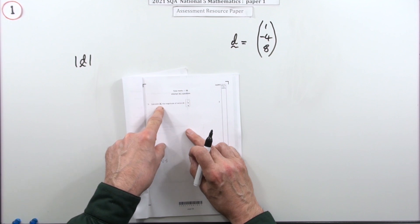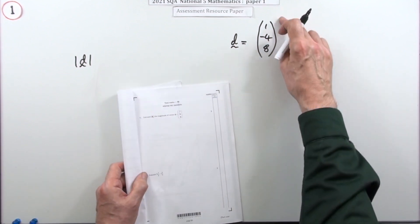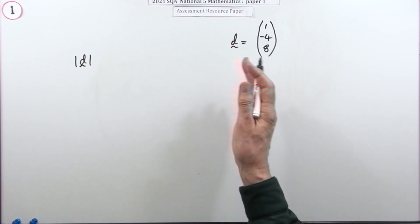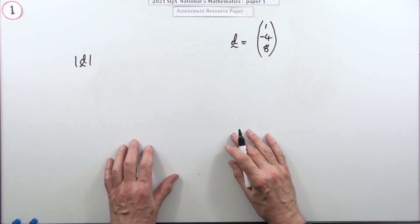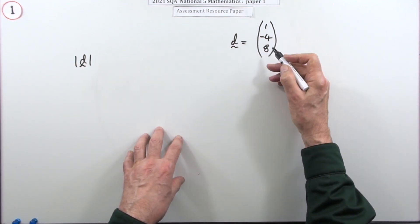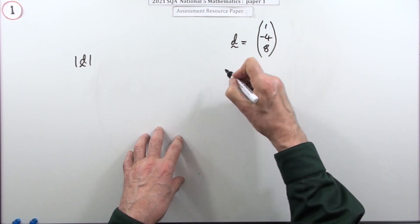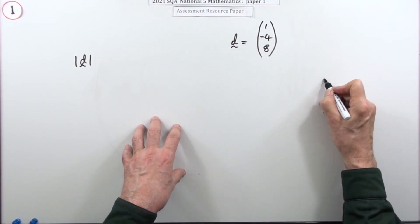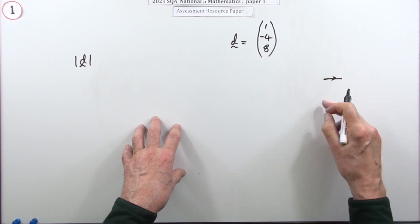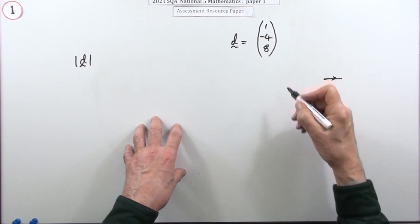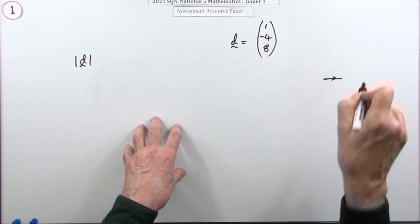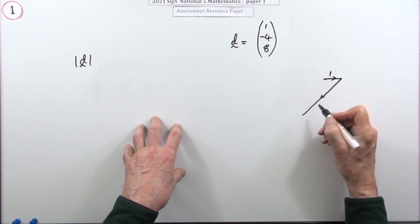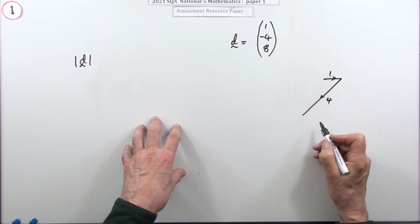What's the magnitude of vector d? It's written as a column vector with three components. That means you use Pythagoras in three dimensions, because the components tell you how far you go from start to finish. So you go one in the x direction, and negative four means you go four the other way — I'll put a positive four there.